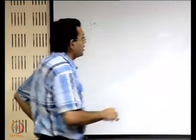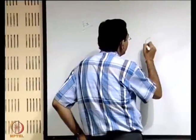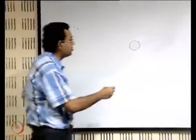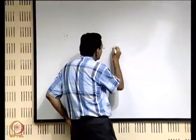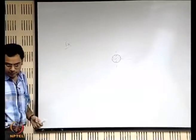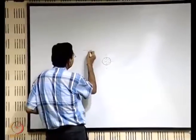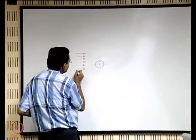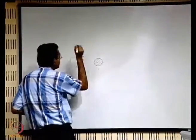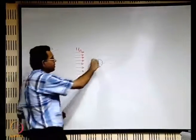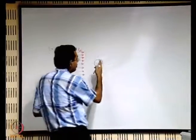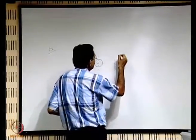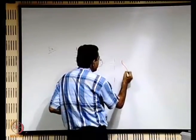Let us take an example where we have a solid body — say a solid body of whatever shape, maybe circular — and fluid is flowing. It is coming from a free stream with a uniform velocity u-infinity, and because of the presence of the solid the velocity is disturbed. If you go a little bit away from the solid and draw the velocity profile, let us make a sketch of how the velocity profile looks.